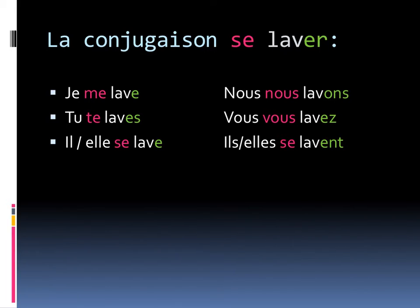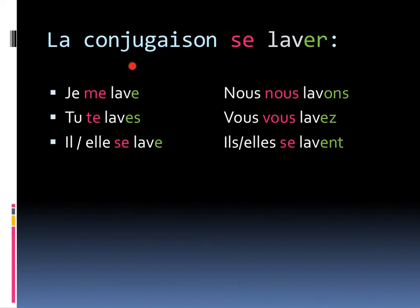Voici la conjugaison, se laver. We've color-coordinated this for you so that it will help. You'll always see the infinitif — the verb with no changes — as a se in front. That's the reflexive signal: I'm doing this verb to myself. Then you'll have the verbe, and we follow normal ER conjugation patterns for it. So the first thing to do is put in your sujet: je, tu, il, or elle, as well as nous, vous, ils ou elles pluriel. We're going to make a switch with se, ici.